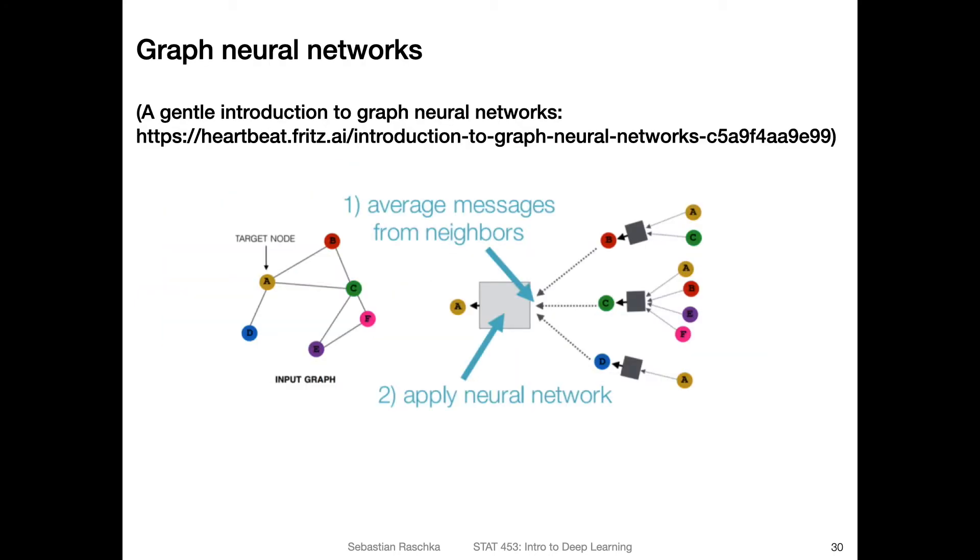Another recent research trend is the focus on graph neural networks for graph-structured data. Traditionally, deep learning was focused on text data and image data. Nowadays, people also work with graph neural networks. If you have graph-structured data, for example, personally I work with molecules, like structures of small molecules. You can think of them as graphs, where you have atoms connected by covalent bonds.